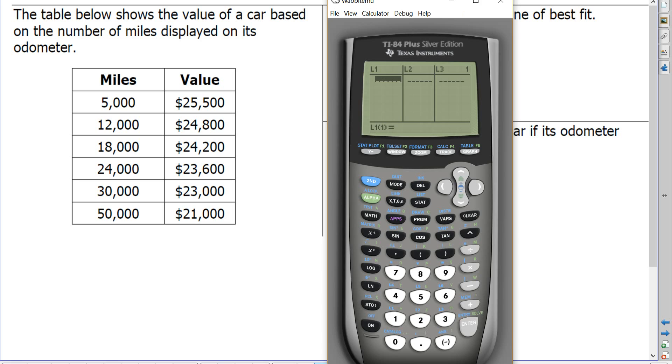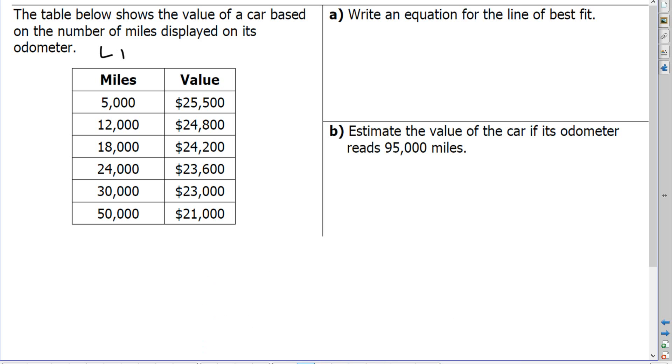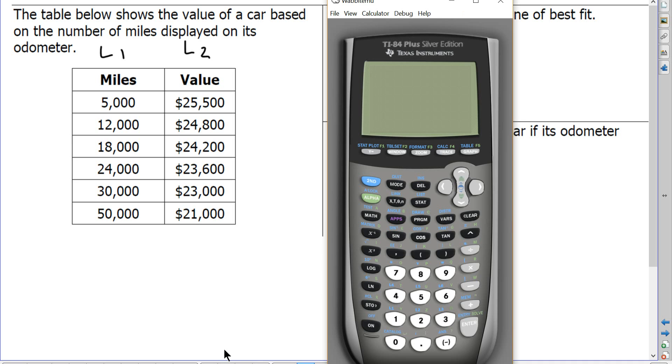So the first thing you're going to need is your graphing calculator. So I'm going to turn my graphing calculator on, and I'm going to enter my data values here. My miles are going to represent my L1, or my X values, and my value here will be my L2s, or my Y values. So I'm going to enter them into the stat, so that's this button here, and number 1, which is edit.